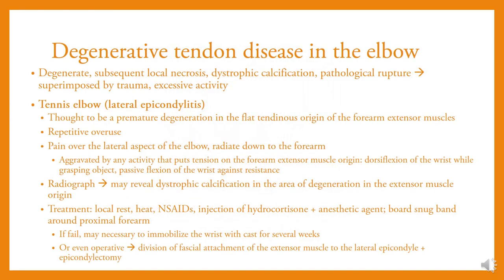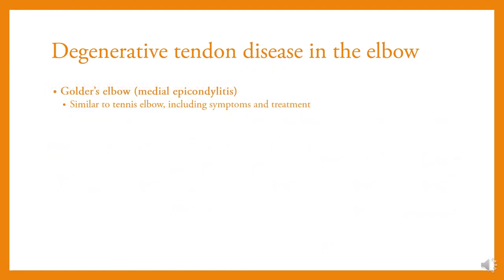Degenerative tendon disease in the elbow involves subsequent local necrosis, dystrophic calcification, and pathological rupture. Tennis elbow (lateral epicondylitis) is thought to be premature degeneration in the common extensor origin of the forearm extensor muscles due to repetitive overuse, causing pain over the lateral aspect of the elbow; radiograph may reveal dystrophic calcification in the area of degeneration. Treatment: local rest, heat, and injection of hydrocortisone with anesthetic agent; a snug band around the proximal forearm; if failed, immobilization of the wrist with a cast for several weeks, or operative division of the fascial attachment of the extensor muscles to the lateral epicondyle — epicondylectomy. Golfer's elbow is similar to tennis elbow in symptoms and treatment.